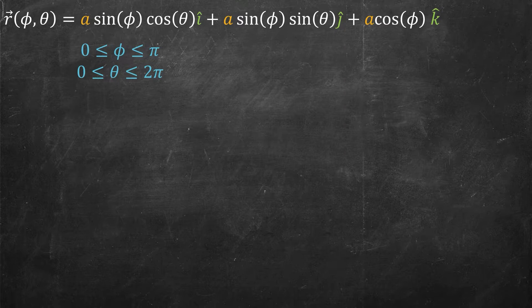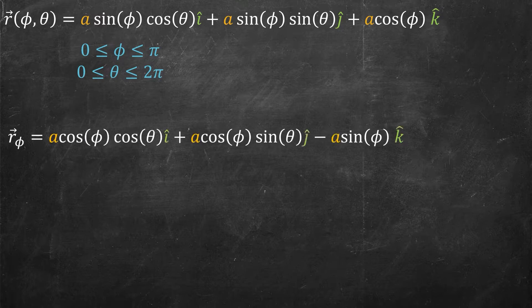So I've stated my parametrization, the position function r(φ,θ) is as we had it. The first thing I need to do is compute two different derivatives, so I'm going to do first the r_φ, so this is the derivative of the position vector with respect to φ, and so I just haven't touched anything with θ, and I've just taken the derivative of sine to become cosine, and likewise the derivative of cosine to become negative sine.